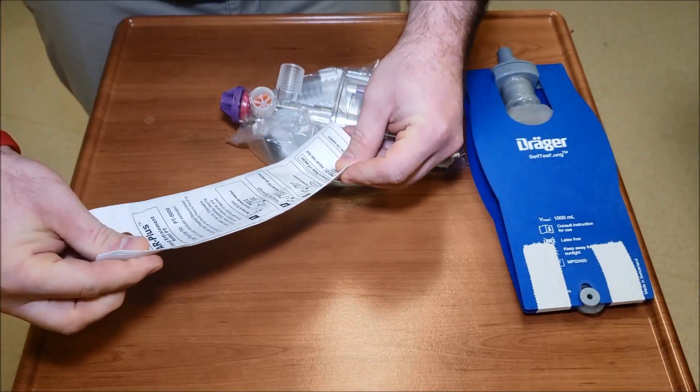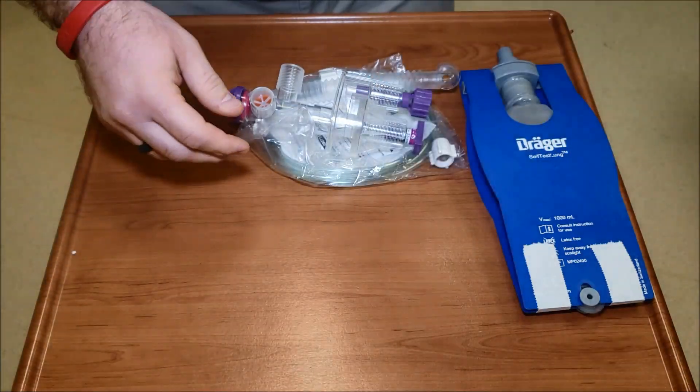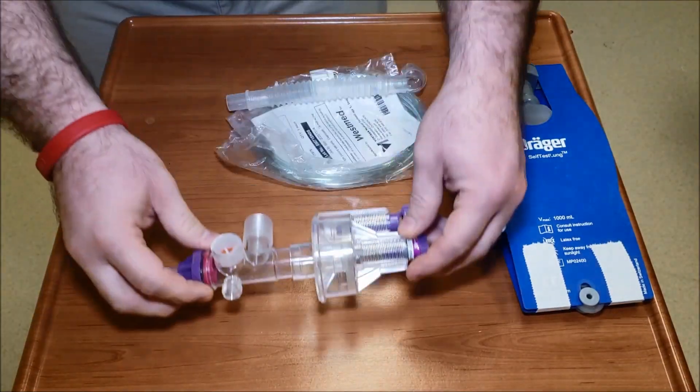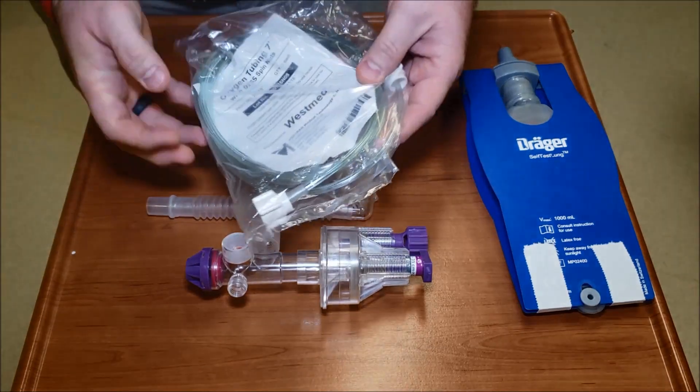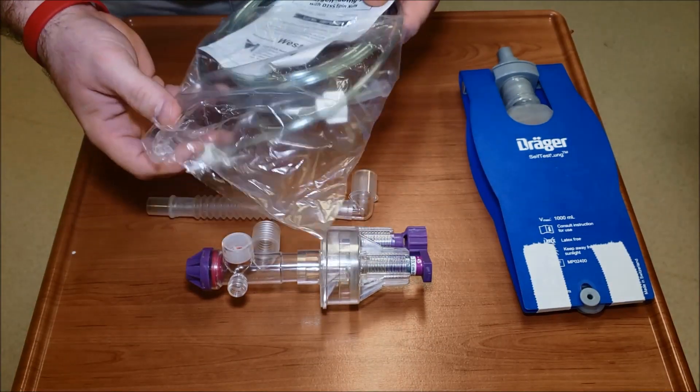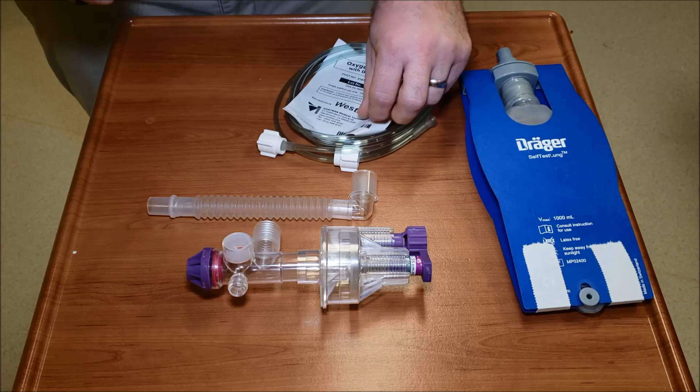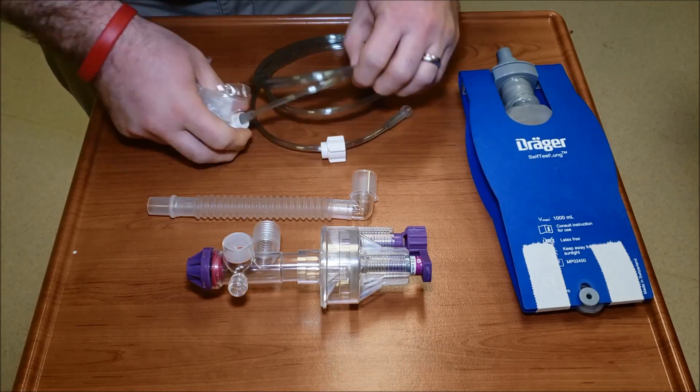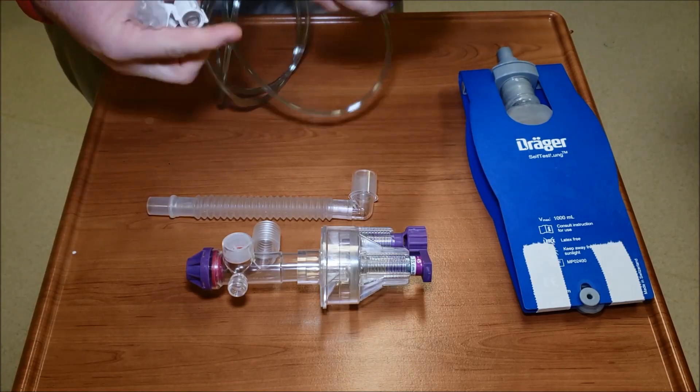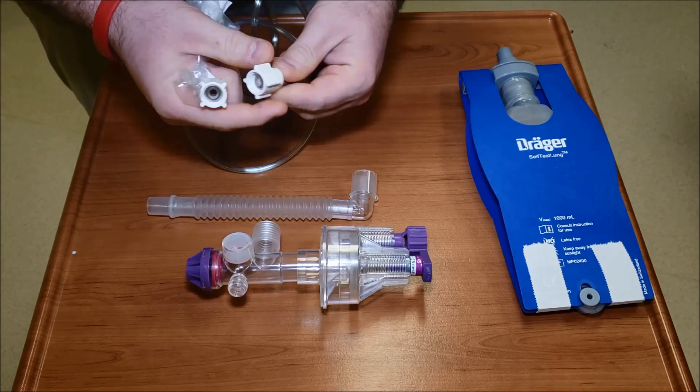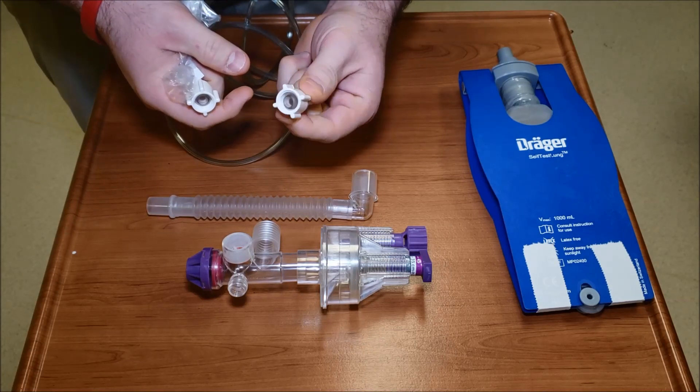We have a couple different pieces. Obviously this is the easiest one to look at - this is from WestMed, this is the oxygen tubing for it. You can see that it has adapters on both sides. This will actually screw directly into the flow meter.